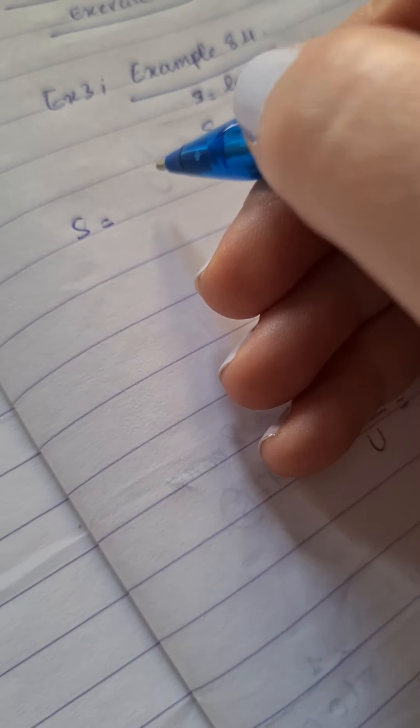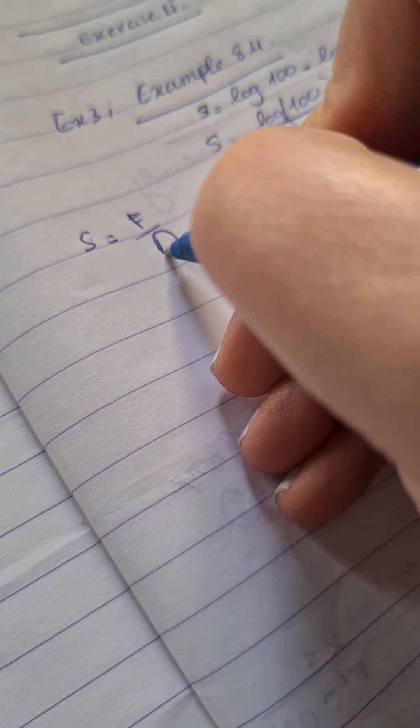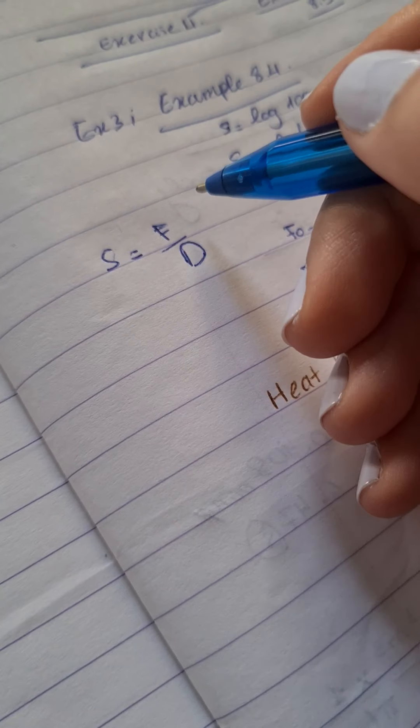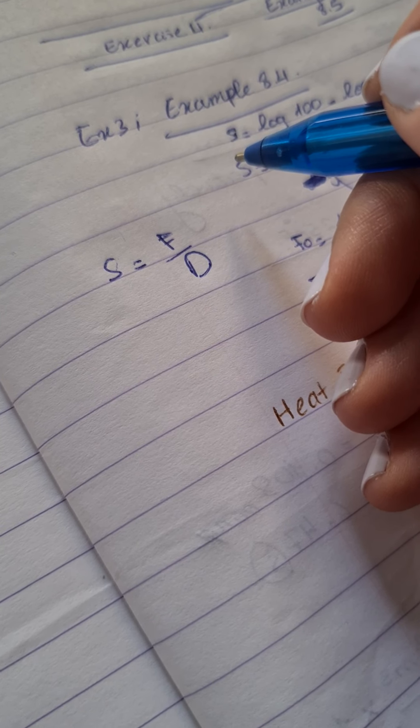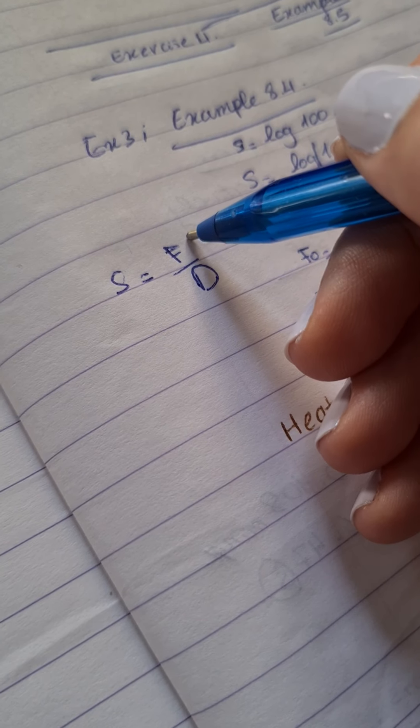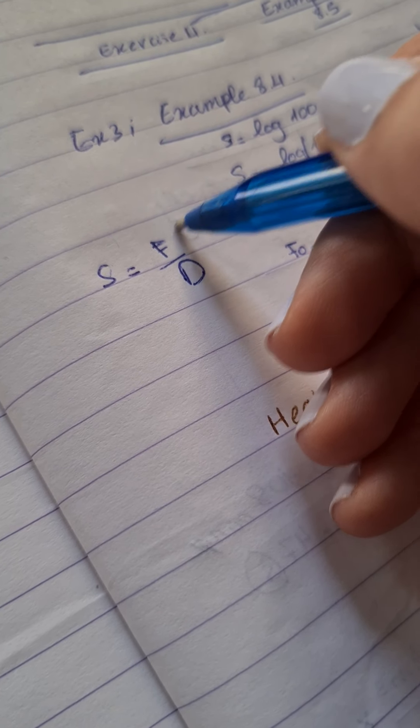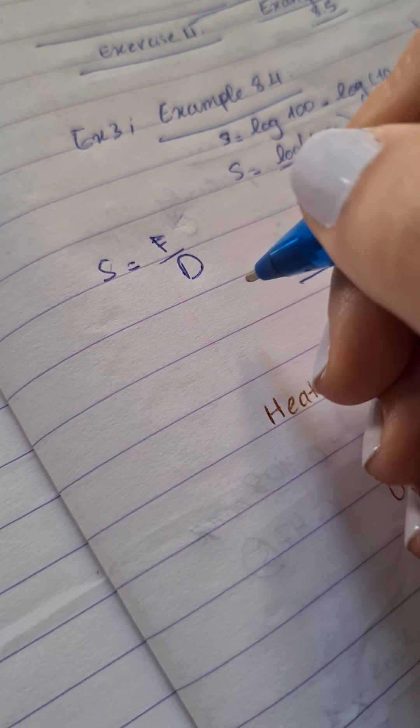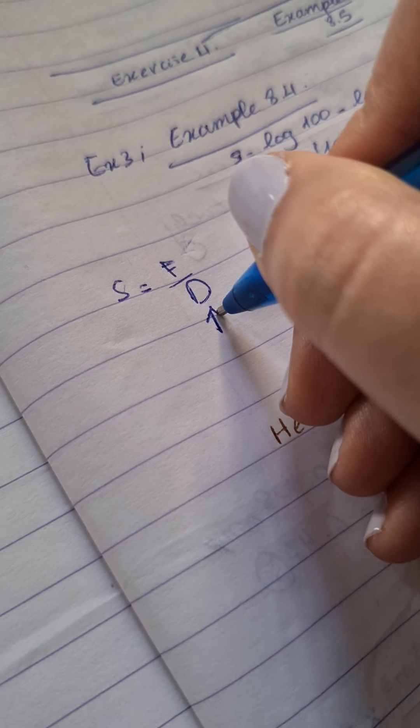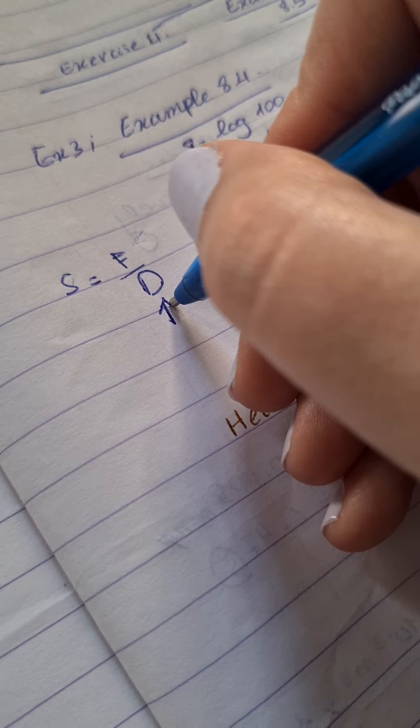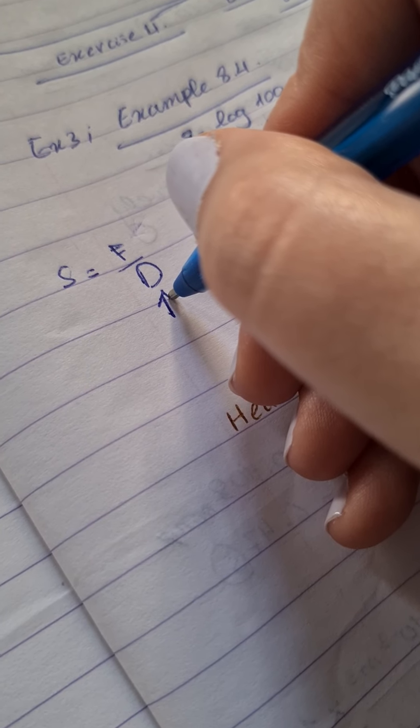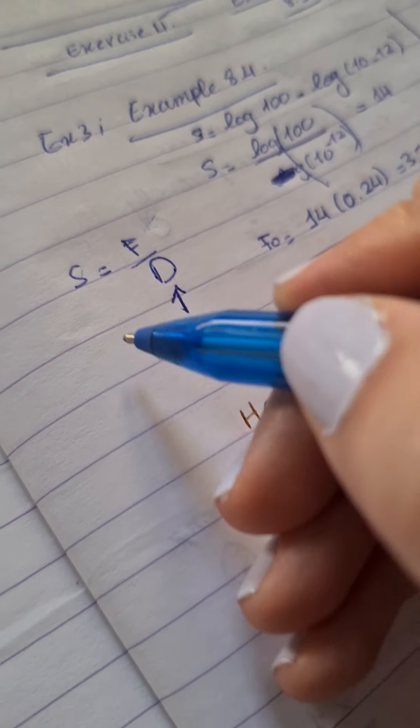Now, we know the following equation as well, which is S equals F over D. What is S? Again, it's the number of decimal reduction. The F is the process time equivalent to the lethality of a given process. And D is the decimal reduction time, which is required to reduce the viable population by a factor of 10.